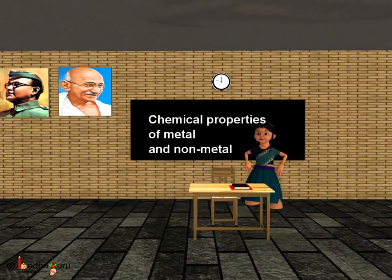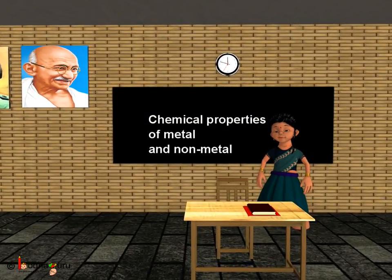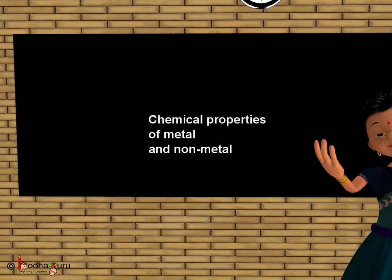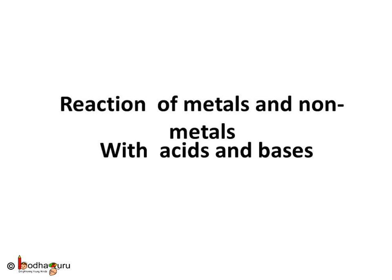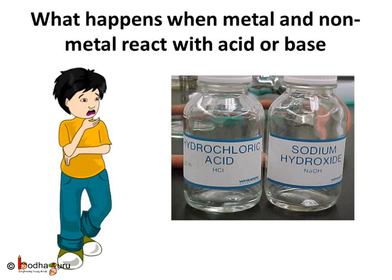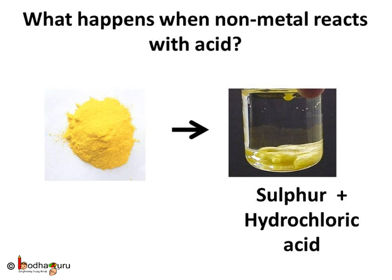Good morning children. Today we shall learn about a few important chemical properties of metals and non-metals. Acid and base are two very important types of chemicals. What happens when non-metals and metals react with acid or base? Let us first see what happens when a non-metal reacts with acid.